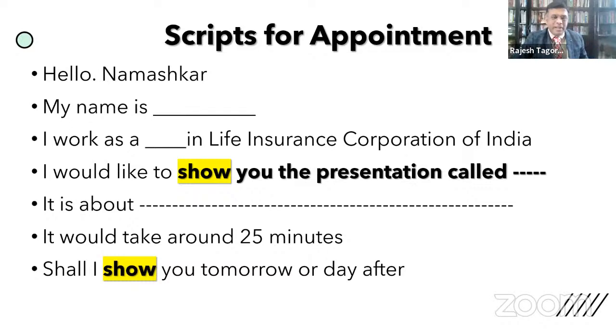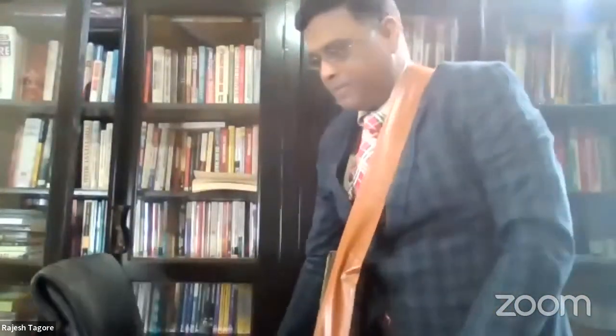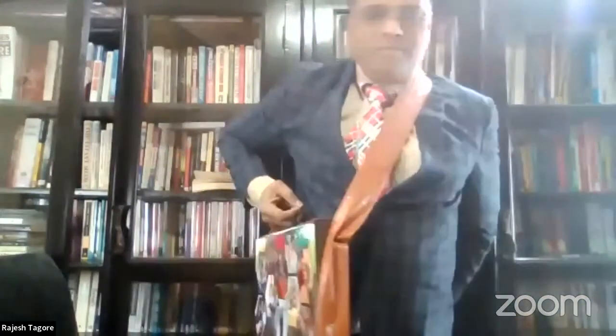You can pick up a phone and speak to anybody. It can also be done on a cold call. When doing a cold call while holding the kit, say: 'Namaste sir, my name is Rajesh Tagore. I work as an agent in the Life Insurance Corporation of India. This is a kit called the Wealth Kit, which has a lot of information about how to make you wealthy. Showing the kit requires approximately half an hour to one hour. Shall I come to show this to you tomorrow or day after?' This can be used while doing cold calls.